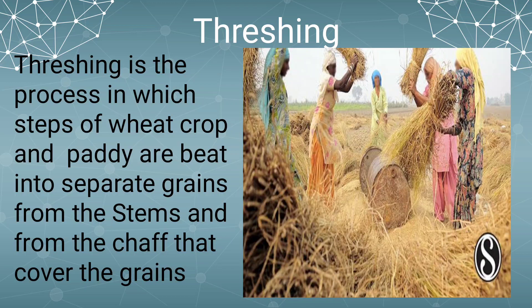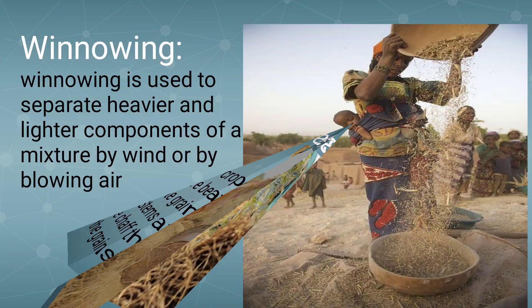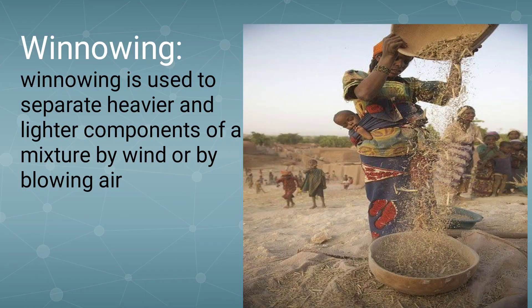Sometimes threshing is done with the help of bullocks. Machines are also used to thresh larger quantities of grains. Now, the third method is winnowing.